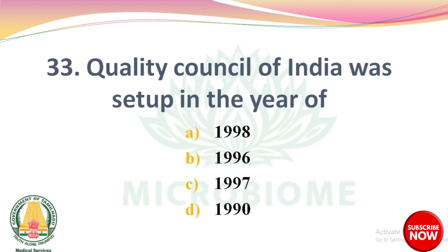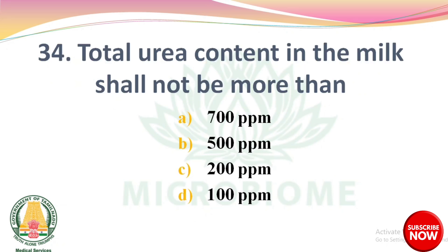Question 32: Quality Council of India was set up in the year — options: 1998, 1996, 1997, 1990. The right answer: option C, 1997. Question 33: Total urea content in milk shall not be more than — options: 700 ppm, 500 ppm, 200 ppm, 100 ppm. The right answer: option A, 700 ppm.